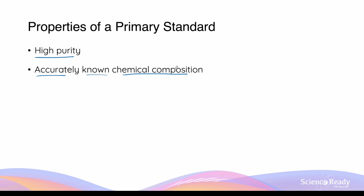In simpler words, the sample ideally shouldn't have any impurities, which will interfere with measurements and affect the accuracy of the calculated concentration. For example, if we want to measure two grams of a particular chemical and dissolve this in water to make a standard solution, we want to ensure that all two grams is pure and contains only the desired chemical. The more impurity in the sample, the more inaccurate the final concentration will be.